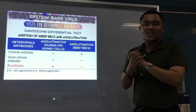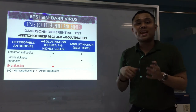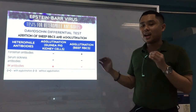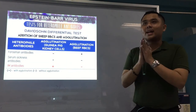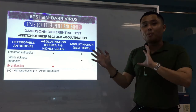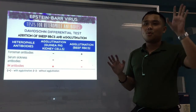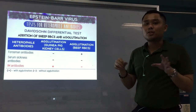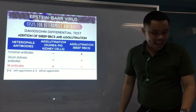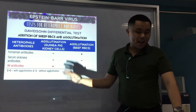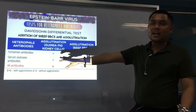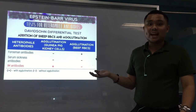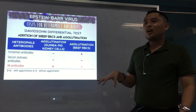That's how you perform the Davidson Differential Test. What we're really after are the IM antibodies. As you can observe, opposite reactions occur in the adsorption and agglutination steps. Those are the heterophil antibodies. Another way or another serological method for EBV is we detect antibodies against EBV.